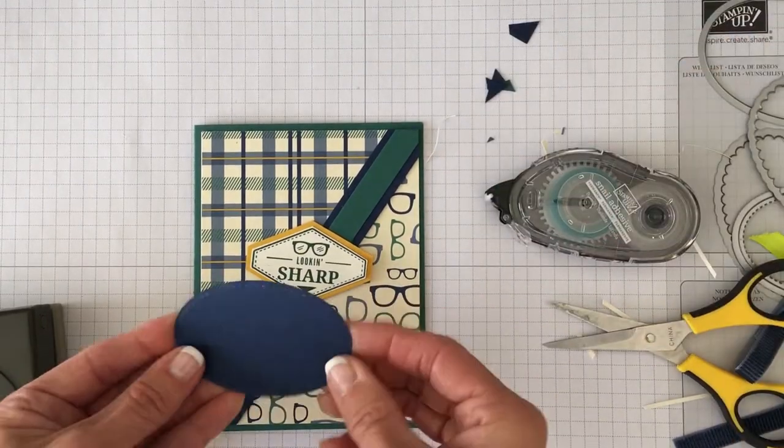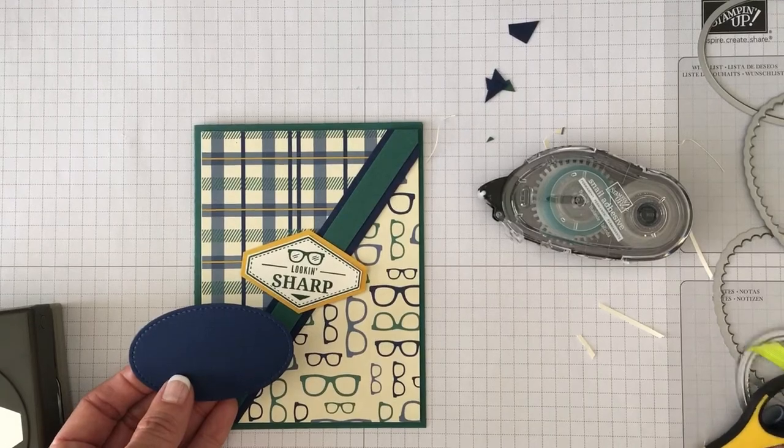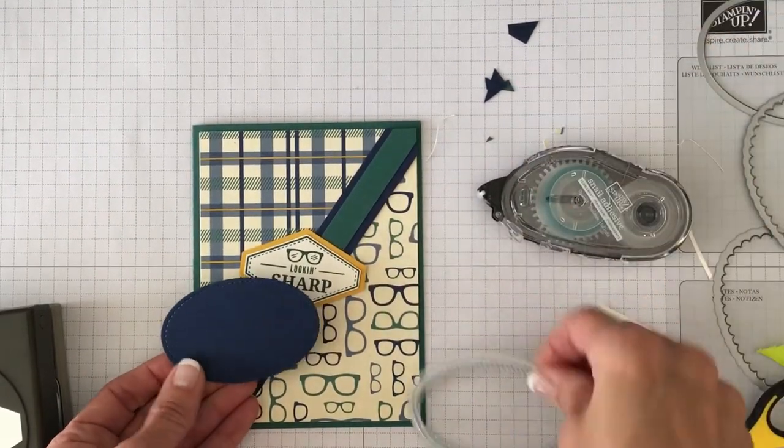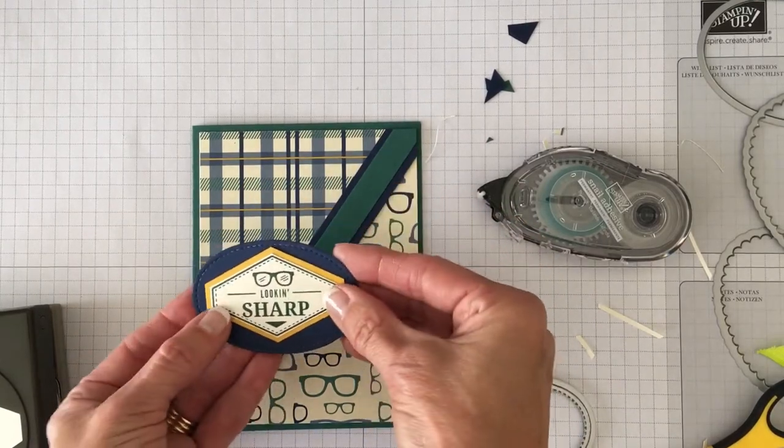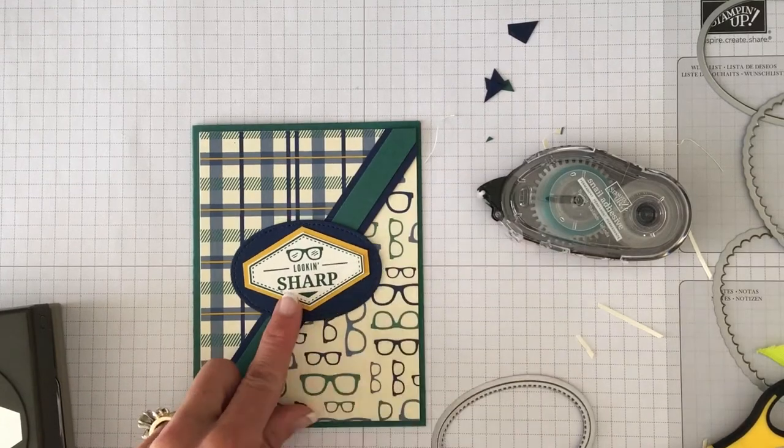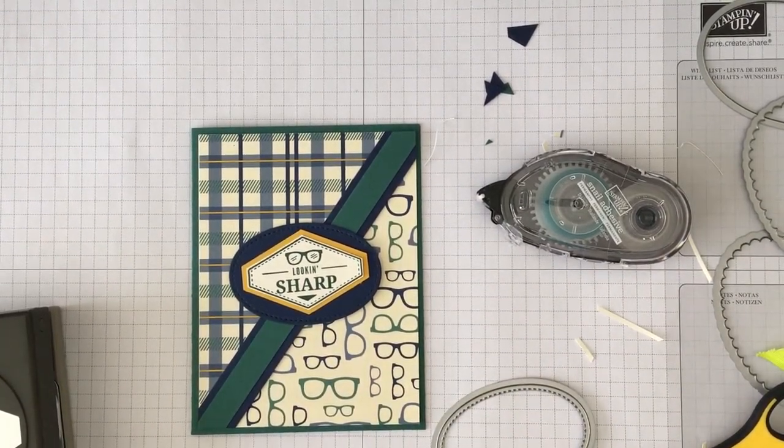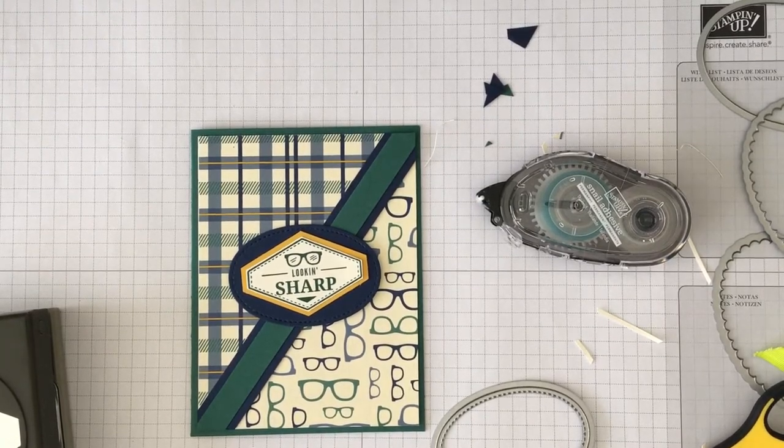So what I did is I took a Night of Navy piece of scrap and I used the Stitched Shapes Framelits. I used the next-to-the-largest stitched frame oval and I just ran it through the big shot and then I had a nice border behind the looking sharp tag.